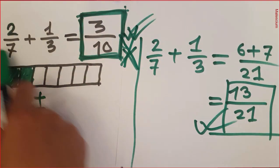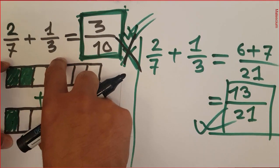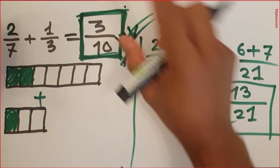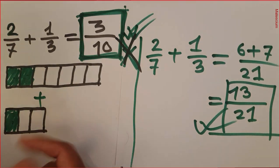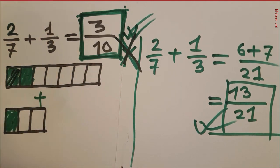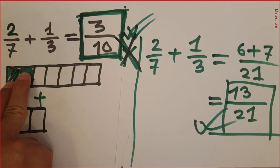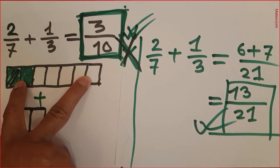And this answer is not correct. This is a wrong answer. But according to this graphical explanation, this answer is wrong. I'm explaining now why it's wrong. Look at here. I told you 2 over 7 means 2 out of 7. That's true. But what I did here, I take these 2 boxes means I subtract these 2 boxes from this 7. But actually, this is not the subtraction.